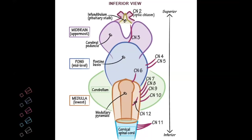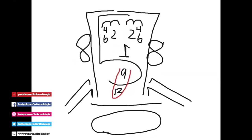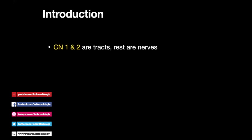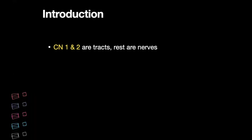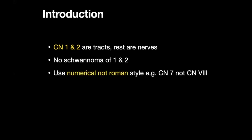Students have been finding ingenious ways for remembering the cranial nerves. A special point to remember is that the first and the second cranial nerves are not lined by Schwann cells. Therefore, if you see a mass lesion along the first or the second cranial nerves, it is not a schwannoma — most commonly it would be a glioma. While reporting cranial nerves, it is preferable to use numerical instead of the Roman style of numbering to avoid confusion.